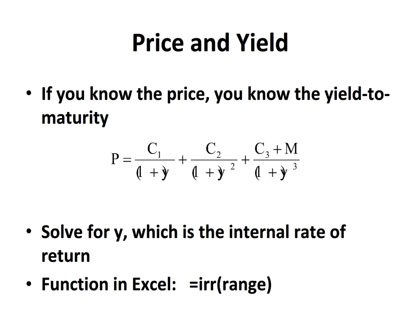If you know the price, and you know the C1, C2, C3, and M, then you can determine the Y in the spreadsheet. Y is the internal rate of return. If we take the price, put a negative sign on it, and stick it over on the right-hand side of the equation, that is the internal rate of return. What we can do in Excel to find the yield-to-maturity is use the internal rate of return function, IRR, and put the range in it.